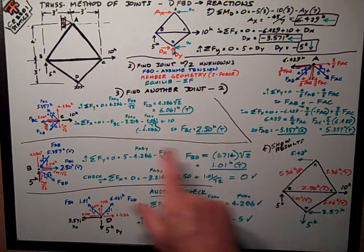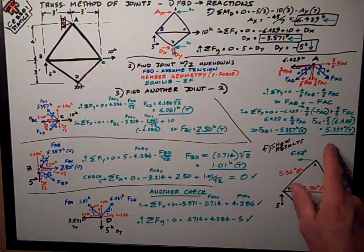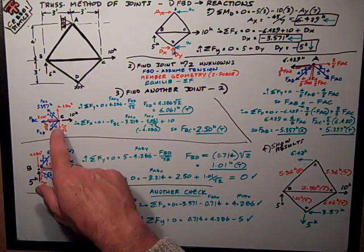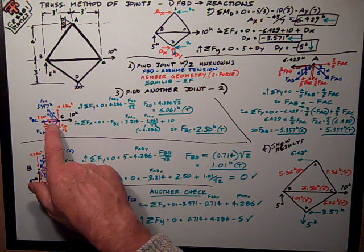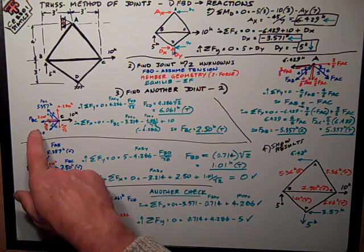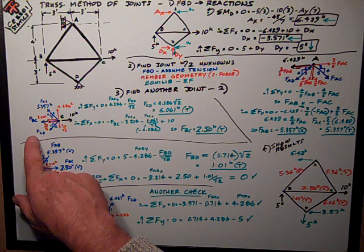The force I know now, FAC, of 5.357. It is tension in AC. So I've put it on there and put its components, its 3-4-5 components. Then the unknown FBC and the unknown FCD.